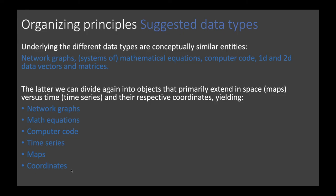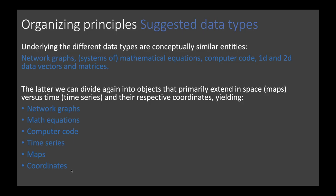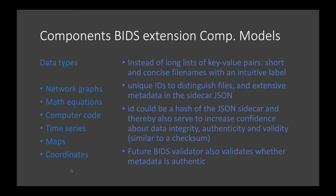Instead of long lists of key-value pairs, we would use short and concise file names with an intuitive label. For example, when we create a file we give it an intuitive label like 'this was run four of my second pipeline with parameter X set to something.' The complete metadata and full information for everyone else to understand would then be stored in the JSON metadata sidecar file.